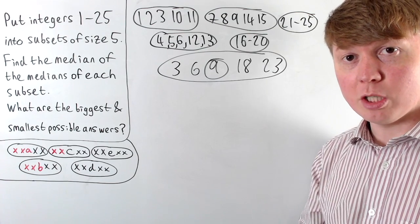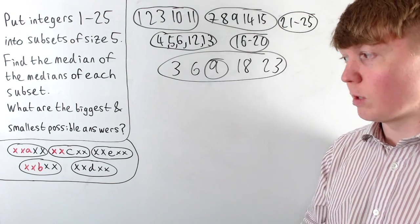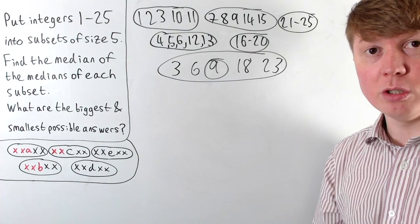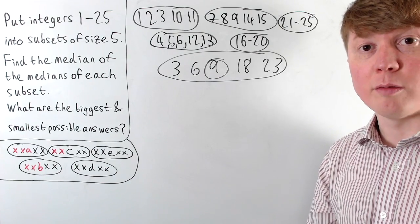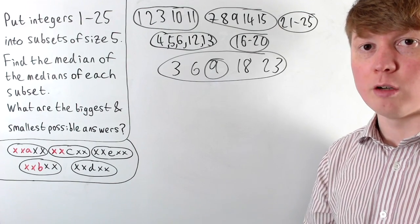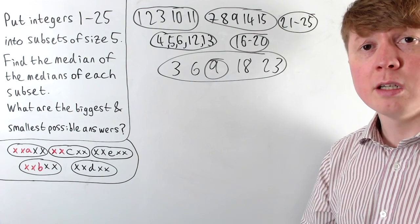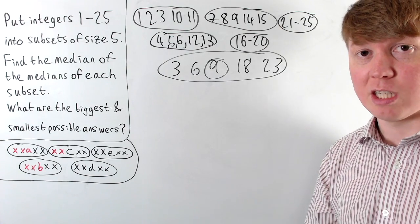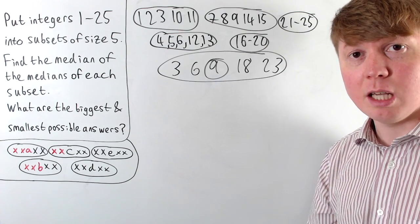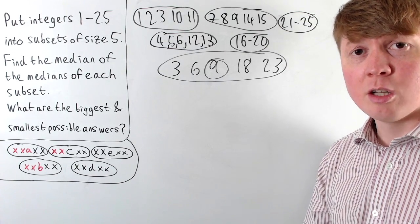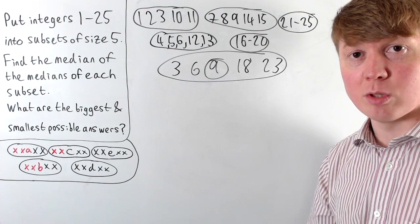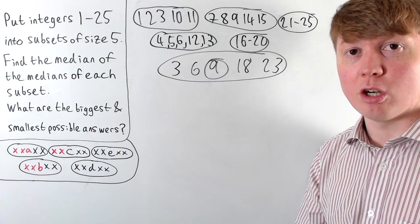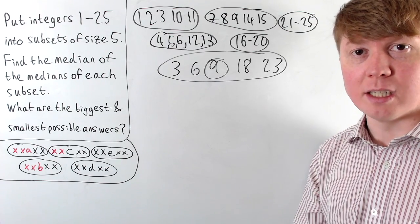It is possible to achieve a median of 9 for all of our medians. So the smallest possible value is 9, because we need at least 8 numbers smaller than our final median of medians. And as we saw, the biggest possible value is 17. So the answer is that we can get anything between 9 and 17 as our median of all of the medians.